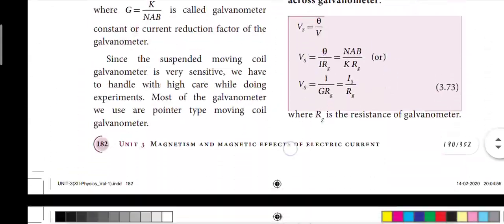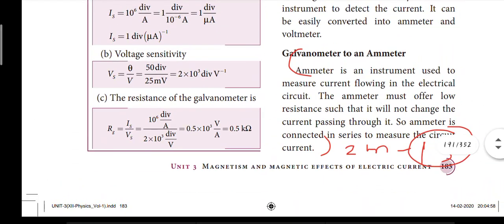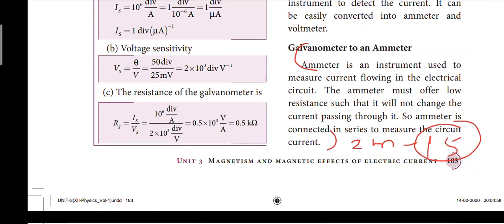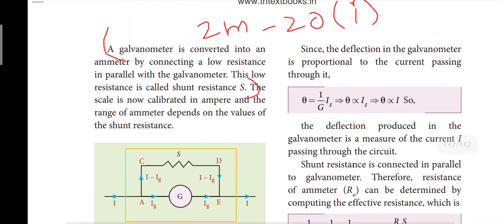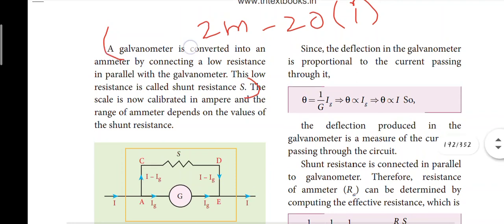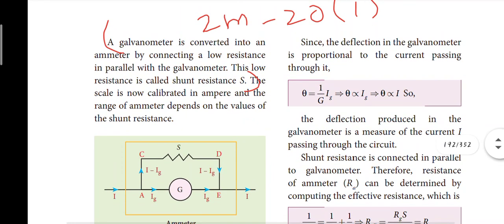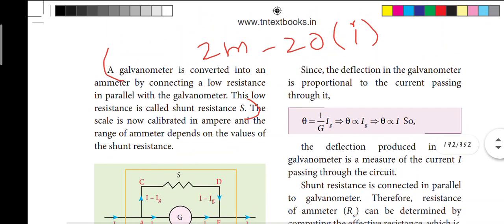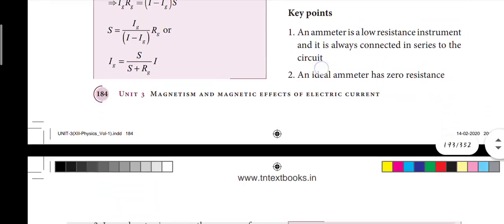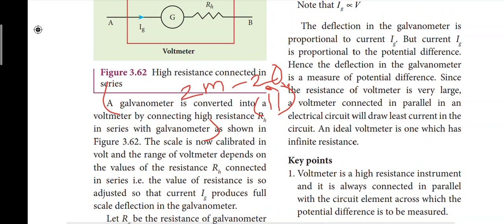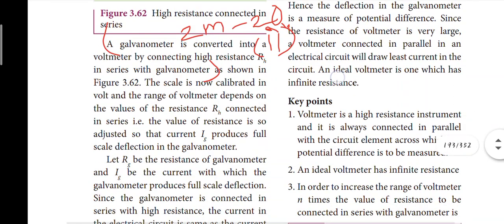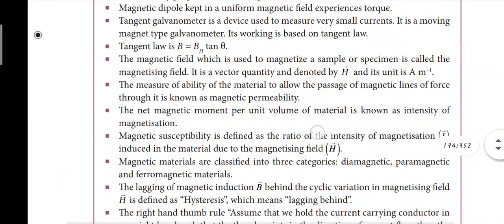Next question: how is an ammeter connected — in series — and why? That is the fifteenth question. For the twentieth question: how is a galvanometer converted to an ammeter and voltmeter? By connecting a high resistance in series with the galvanometer for the voltmeter part.